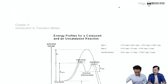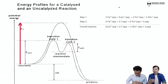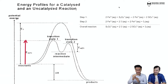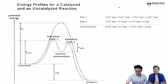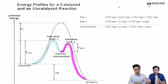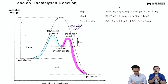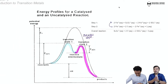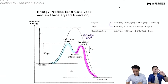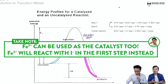Looking at the energy profile diagram: in the uncatalyzed one-step process, the activation energy is very high. Adding the catalyst lowers the activation energy and splits the pathway into two steps, giving two humps. This illustrates the alternative pathway concept. Note that Fe³⁺ can also be used as the catalyst — steps one and two are simply reversed.